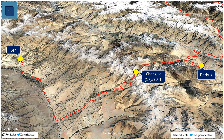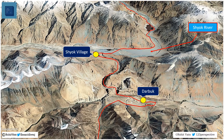The road starts from Leh and crosses the Ladakh range via the 17,590-feet-high Changla Pass. It then descends to Darbuk village. From here, the road passes through a narrow gorge and reaches Shayok village in the Shayok river valley. At Shayok, the road crosses over to the other side, and for its entire alignment along the Shayok river, the road runs along the left bank of the Shayok river.